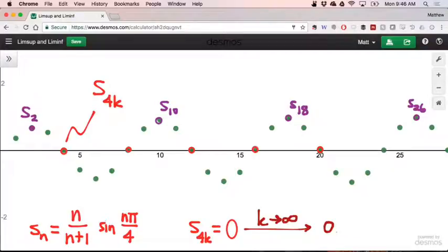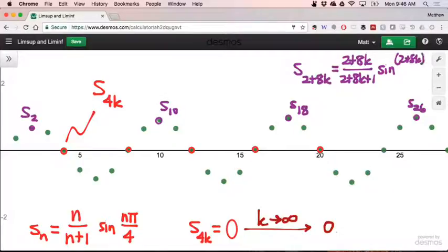We don't have to, but we could write this as the two plus eight K-th term, right? So when K is equal to zero, we get S2. When K is one, we get S10. We're just counting up by eights. So we're taking every eighth term, starting with term number two. Let's find a formula for this, if we can. So we'll get upstairs two plus eight K, divided by two plus eight K plus one. And then we have the sine of two plus eight K pi over four.